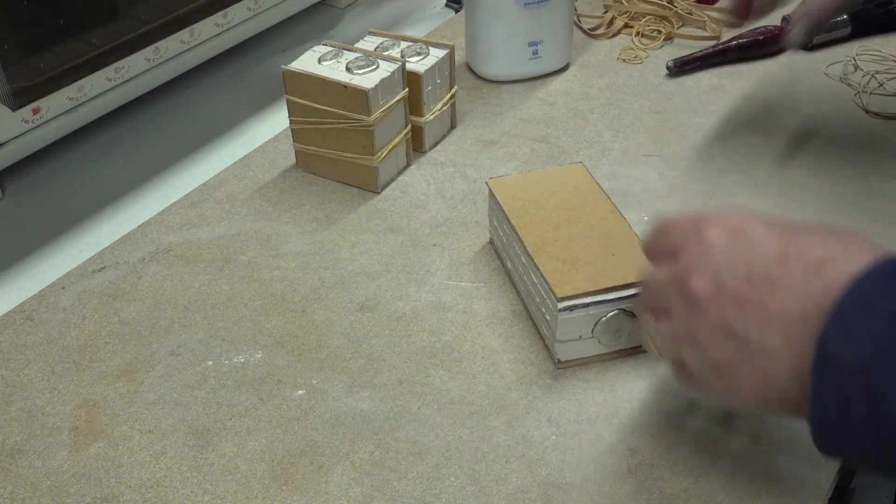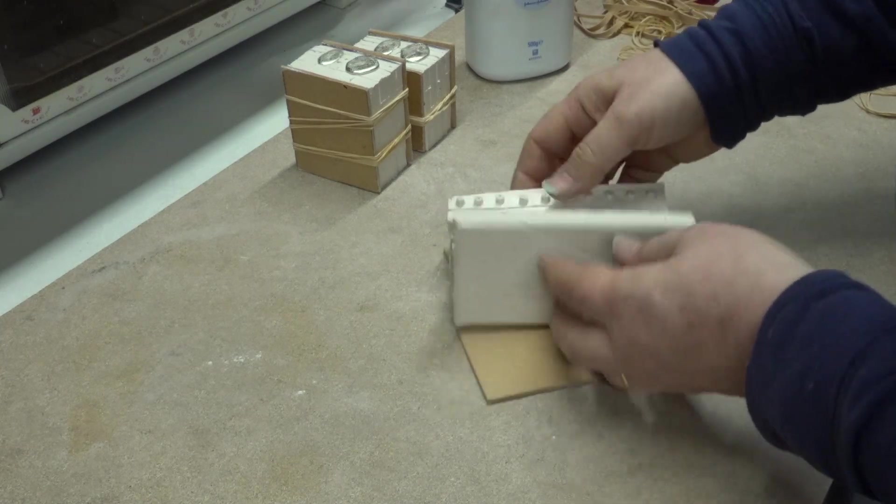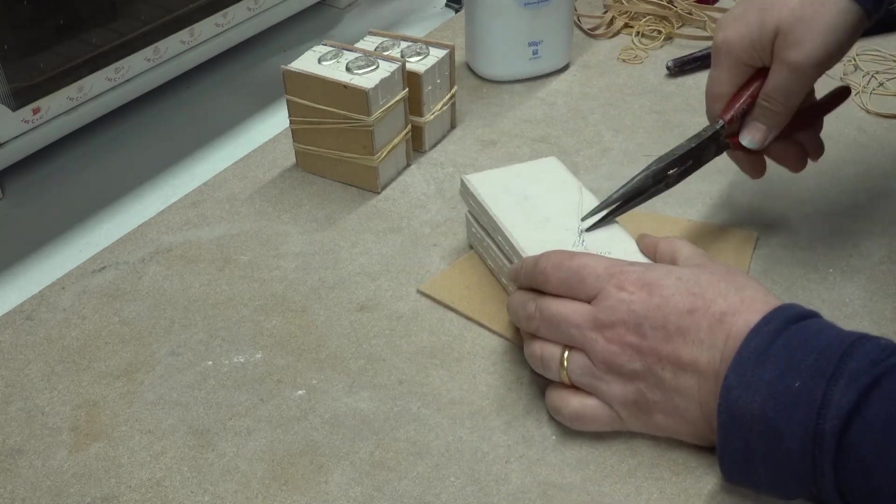Castings seldom come out perfect first time. Rejects can just be put back in the pot and melted down. Often after a third attempt you should have a good idea how the mould is behaving.